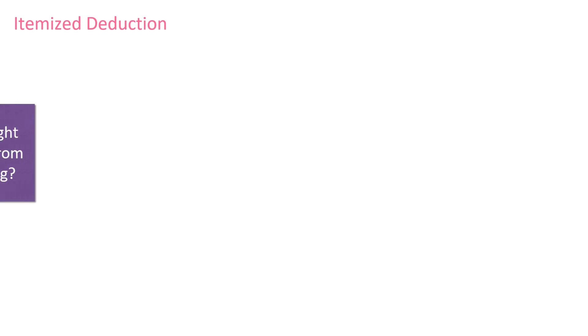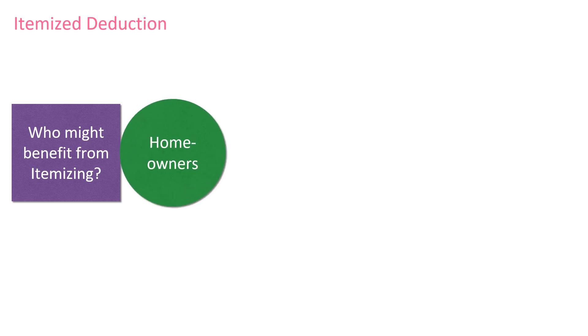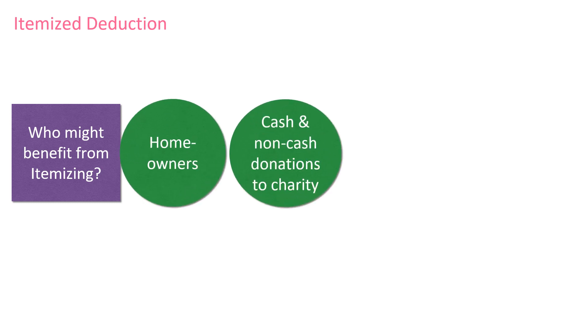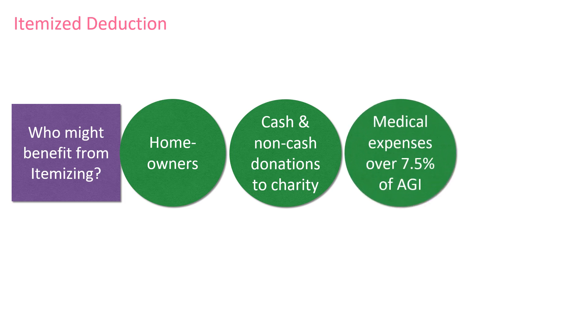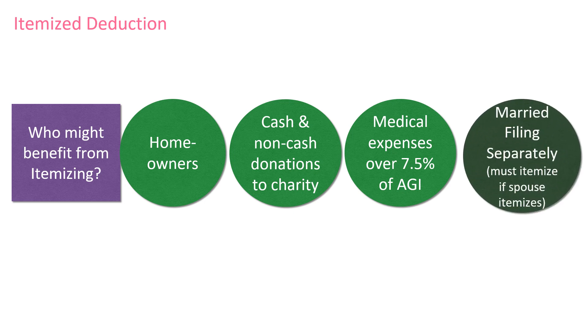For some taxpayers, taking the itemized deduction is better, especially if it's higher than their standard deduction. Taxpayers who might benefit from itemizing include homeowners paying a mortgage, those who give gifts to charity, or have a large amount of medical expenses. Also, taxpayers who are married filing separately must itemize if their spouse does so. Itemized deductions are an advanced level subject and generally very few of our clients itemize because of the large standard deduction.